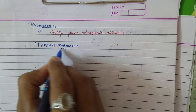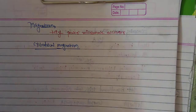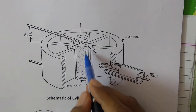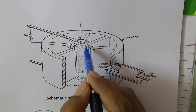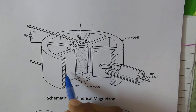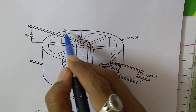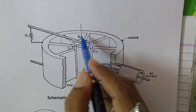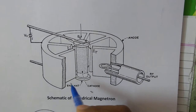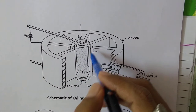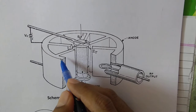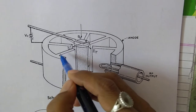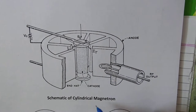Let us see the schematic for this cylindrical magnetron. It has a cathode at the center whose radius is small 'a', and there are several anode cavities placed at a specific distance. The adjacent spacing between cavities is constant, and they have been placed in this fashion around the cathode. All these anode cavities have a specific angular separation, and based on that there are different types of magnetrons.